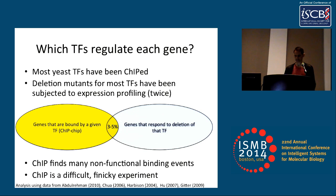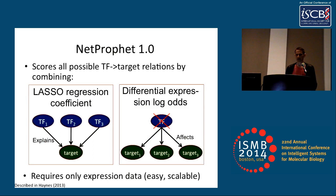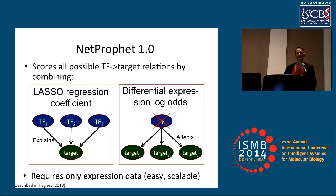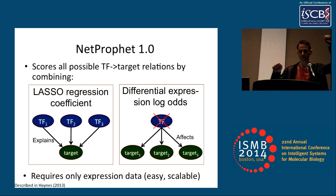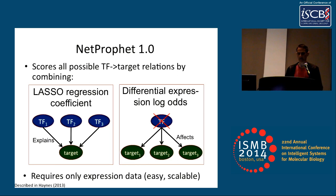To do that, we developed a method called NETPROFIT that scores all possible transcription factor-target interactions by a combination of two things: first, a lasso regression coefficient for explaining the expression level of the target as a function of the expression of the transcription factor; and second, a log odds that the target is differentially expressed when the transcription factor is deleted. This method requires only expression data, which is a very nice feature since expression profiling is an easy commodity method.